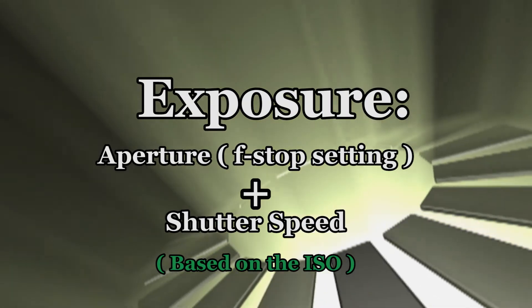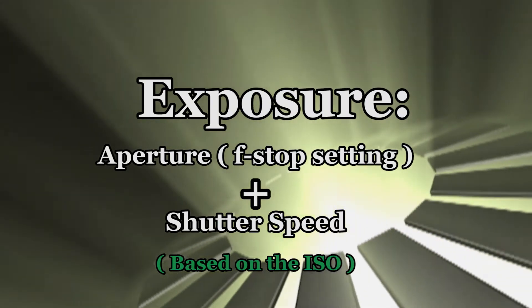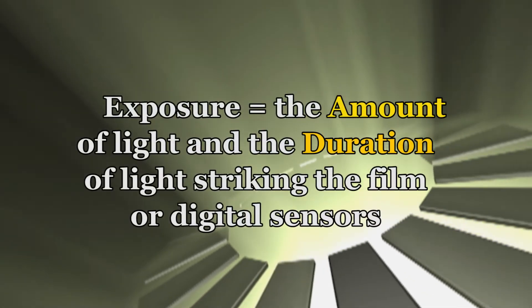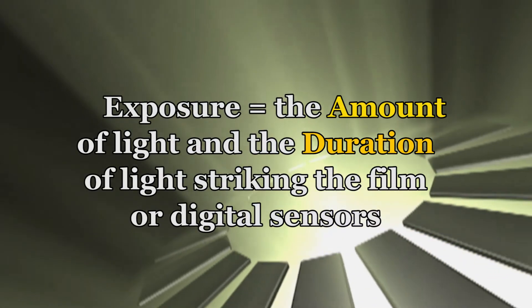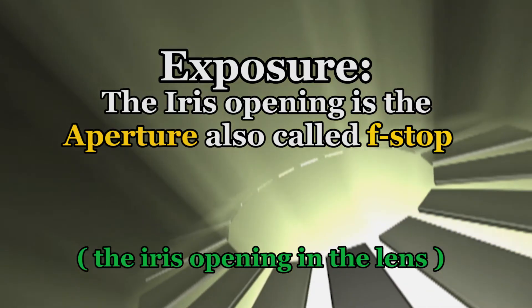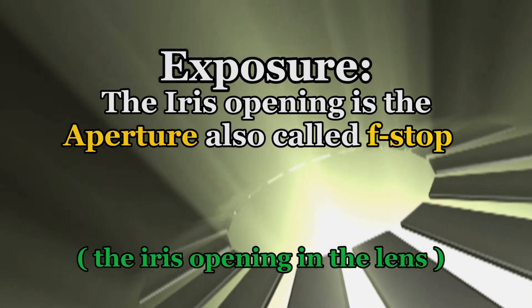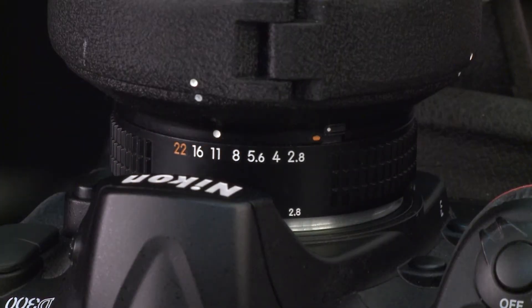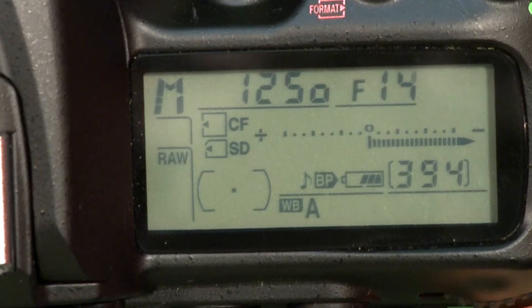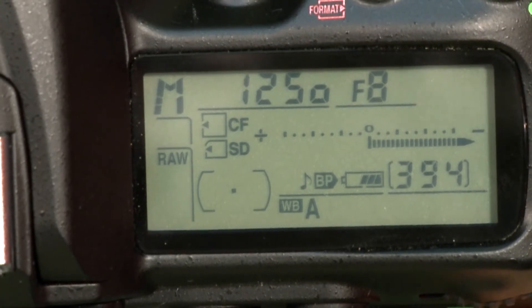Exposure is the combination of the aperture f-stop setting and the shutter speed based on the ISO setting on the camera. So what is aperture and shutter speed? Aperture is the f-stop setting on the lens or an internal setting on a digital camera.